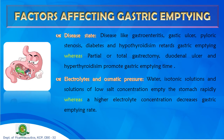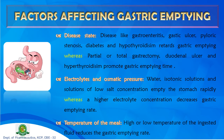Tenth, electrolyte and osmotic pressure — water, isotonic solution, and low-salt-concentration solutions empty the stomach rapidly, whereas higher electrolyte concentration decreases gastric emptying. Eleventh, temperature — higher or lower food/fluid temperatures reduce gastric emptying; an optimum temperature is preferred. These are the key factors influencing the gastric emptying process.